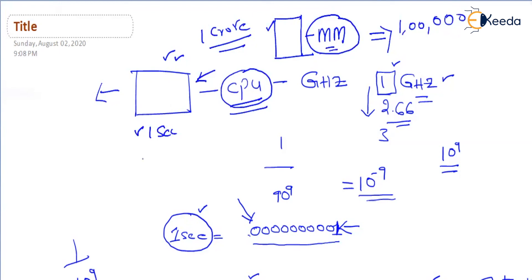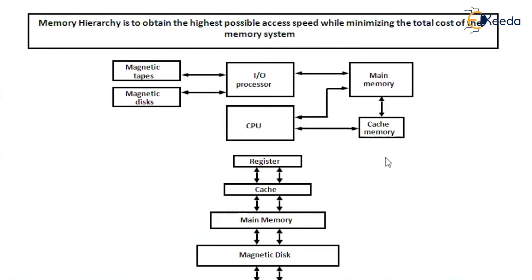The total system speed is limited by the main memory speed, because instructions and data elements are collected from main memory only. CPU is very fast, main memory is very slow, so the system's performance is getting limited by the main memory speed. That is the reason why we use a cache memory in between. In order to compensate the speed differences between main memory and the CPU, we use a small but faster cache memory.